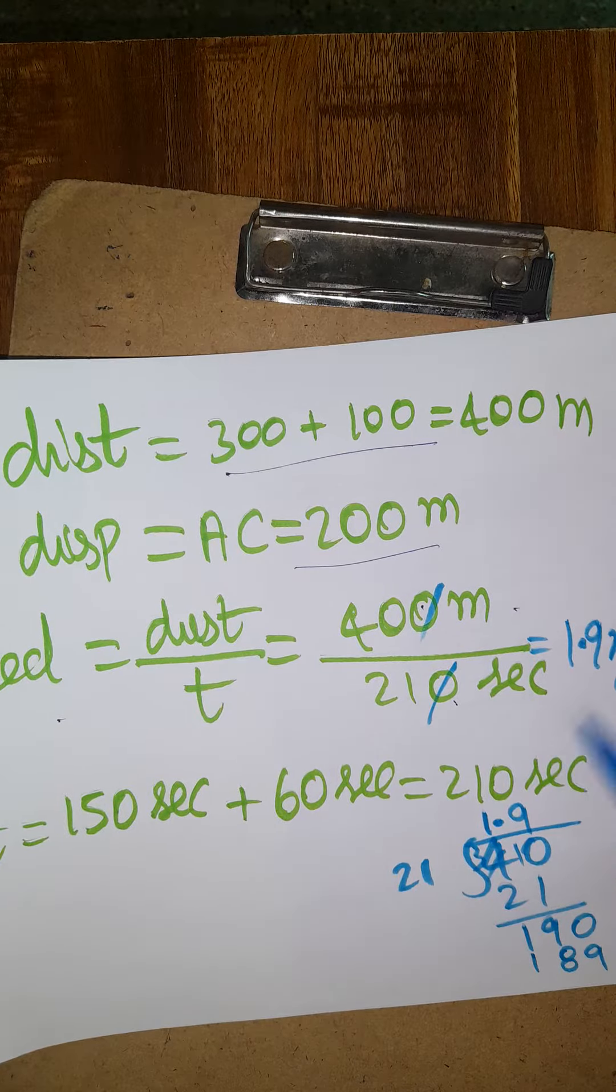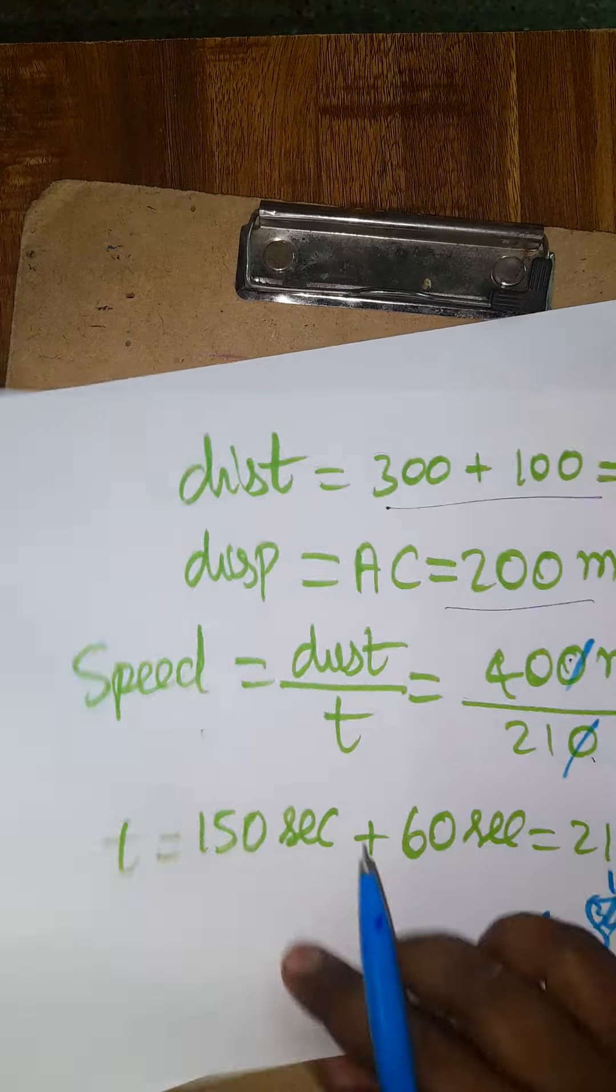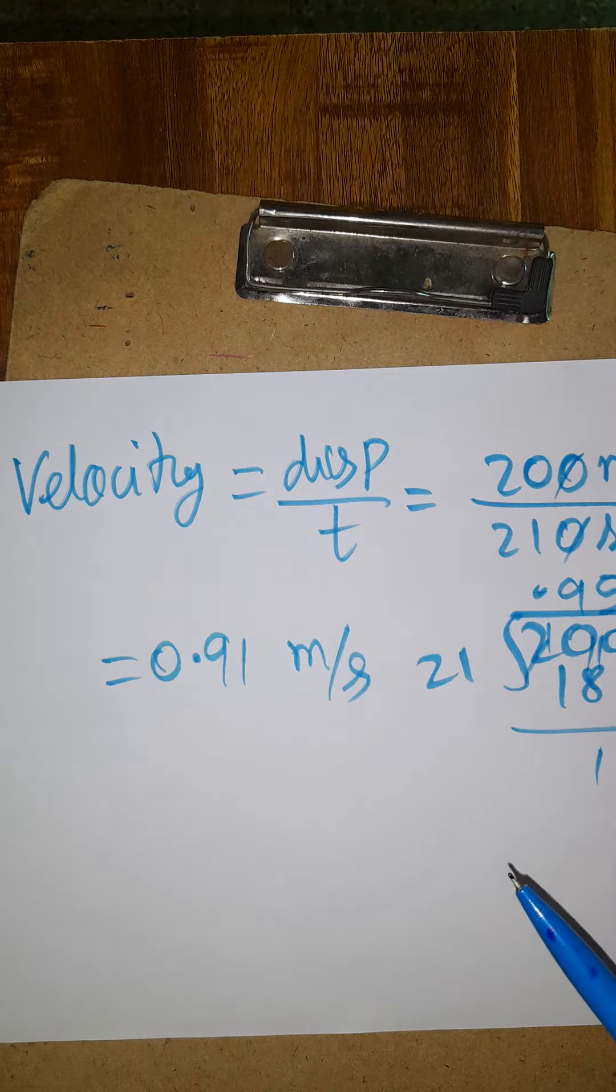Speed equals distance by time, which gives us 1.9 meters per second. Velocity equals displacement by time, which is 0.9 meters per second. Thank you.